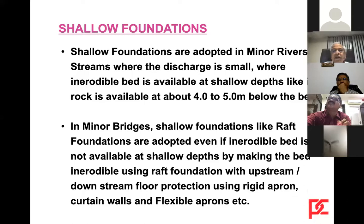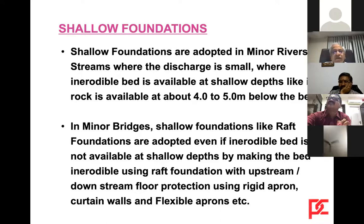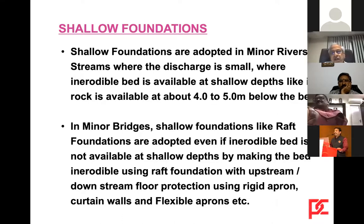Shallow foundations are adopted in minor rivers and streams where the discharge is small and inerodable bed is available at shallow depths — for example, if rock is available about four to five meters below the bed. In minor bridges, shallow raft foundations are adopted even if inerodable bed is not available at shallow depths, by making the bed inerodable using a raft foundation with upstream-downstream floor protection using rigid aprons, curtain walls, and flexible aprons. So we make the bed non-scourable, thereby making it fit for a raft foundation.